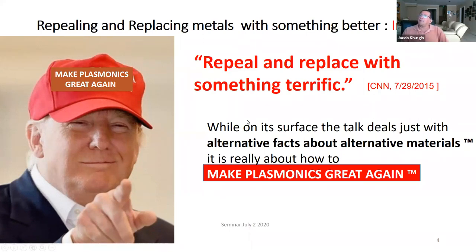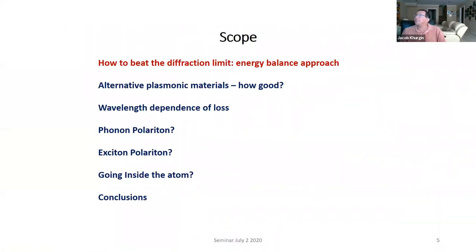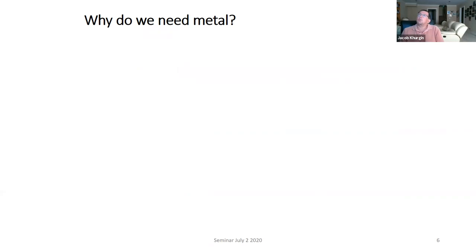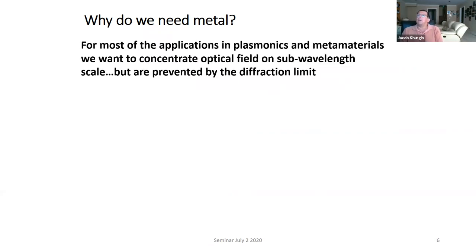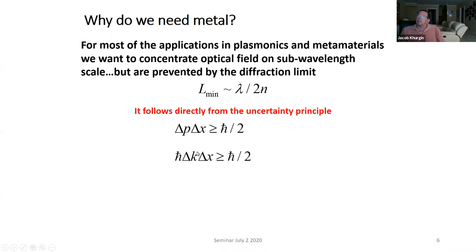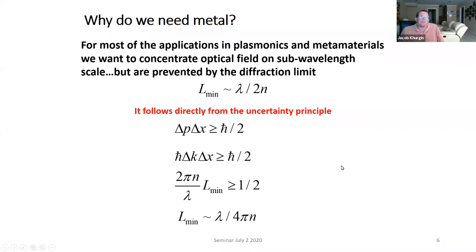So why do we need metal replacement? Why do people presently use plasmonics? Well, for most applications in plasmonics and metamaterials, we want to beat diffraction. One way to address the diffraction limit: if I write the uncertainty principle for momentum and coordinate, and momentum is related to wave vector, wave vector is related to lambda, I get this, which is basically diffraction. So the diffraction limit basically comes from the uncertainty principle.